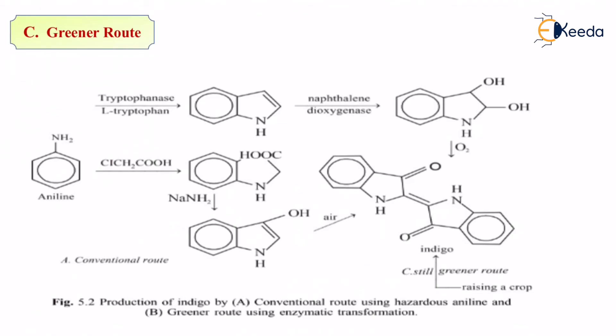So we can see three different methods. The first is the conventional method using aniline. The second is with the help of tryptophanase and L-tryptophan, which is the greener method. The last is just raising the crop — indigo itself has a crop so you can just raise that particular crop giving you the same color and the same product. That is also the greener route. With this we have seen all the methods which can be used for the synthesis of indigo.